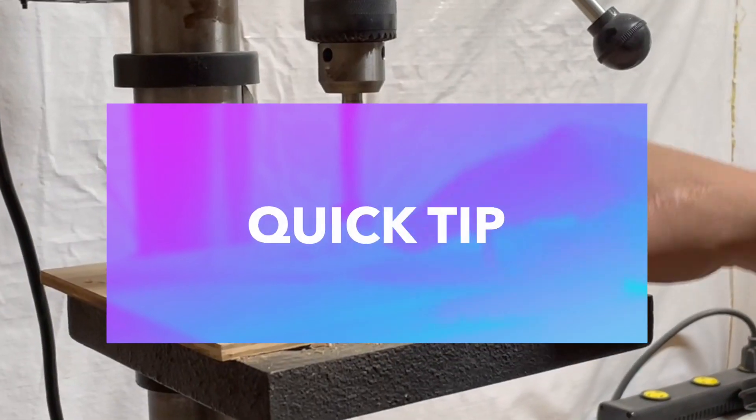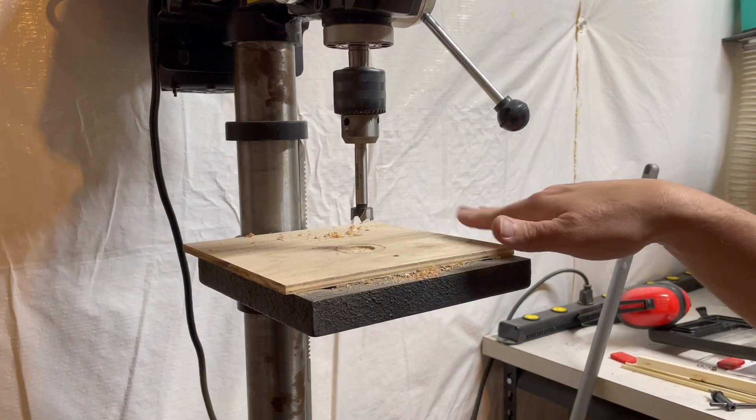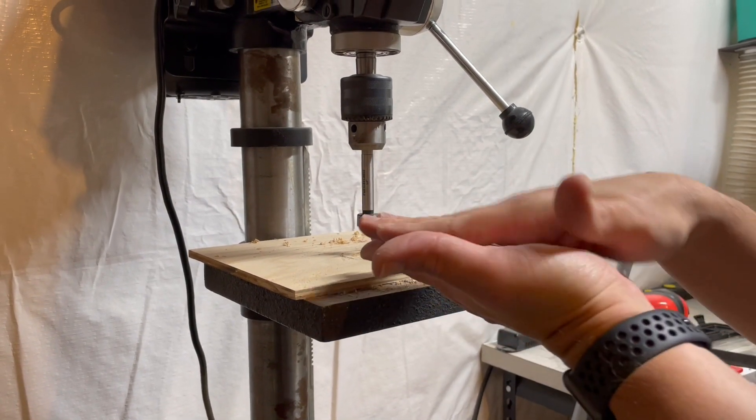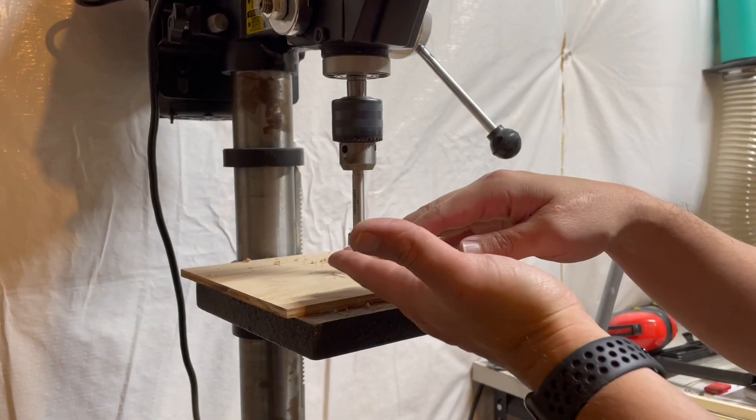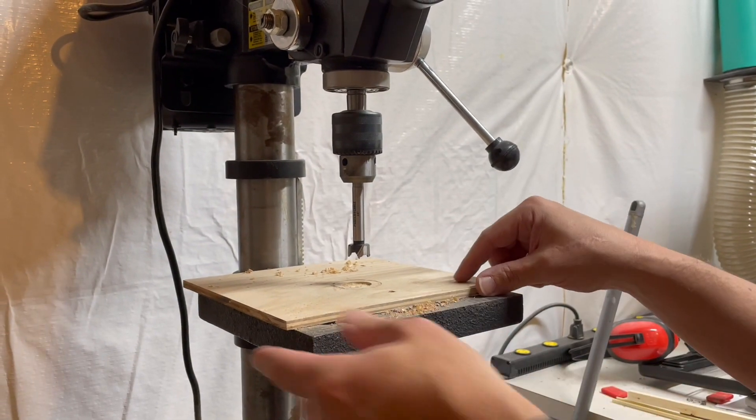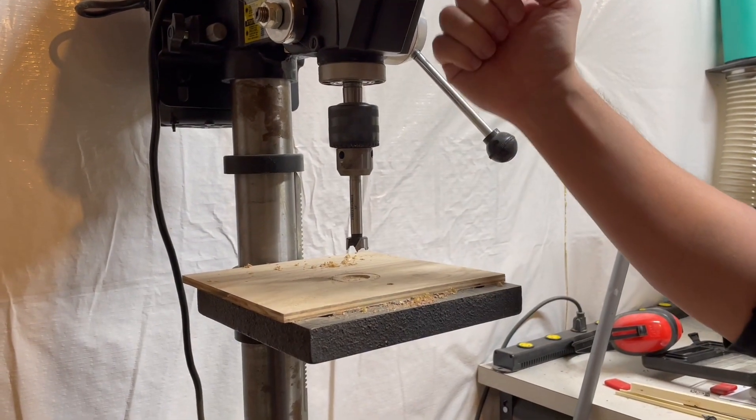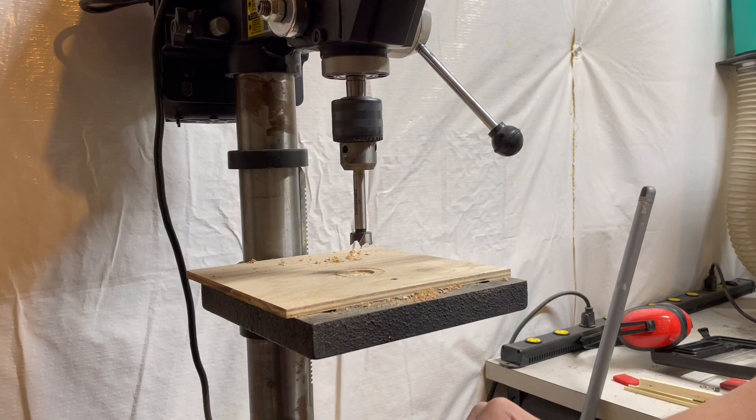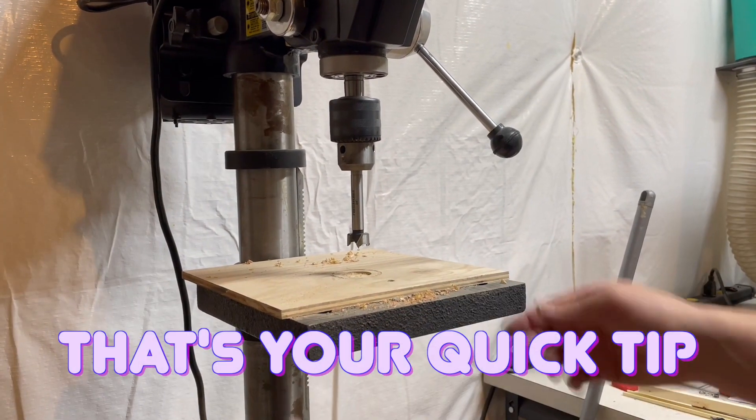Quick tip. Before you drill out anything, make sure you have a spoiled piece in here that will have some pressure on the bottom so that you don't blow out the bottom of your wood. If we didn't have this here and it was just an open hole, as soon as this Forstner bit cut all the way through, on the other side, it would blow out the other end. That's a quick tip.